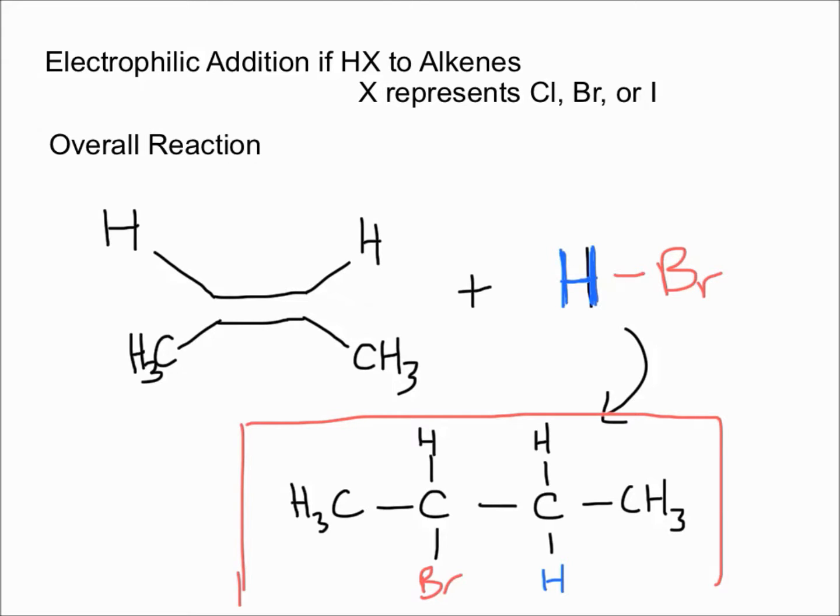To begin with, let's look at the overall reaction. What's happening in this electrophilic addition is that you take an alkene, add an HX where X can be bromine, chlorine, or iodine—in this case we use bromine—and the final product you get is an alkane with the double bond removed.